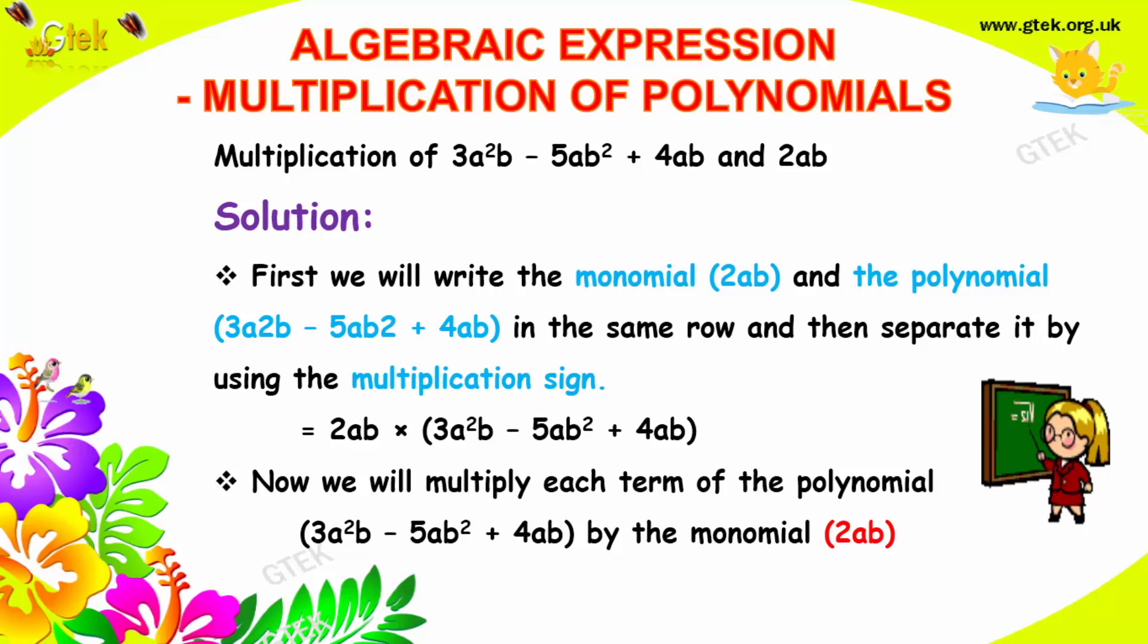I am trying to multiply two expressions. One is 3a²b - 5ab² + 4ab with 2ab. We got a monomial, that's 2ab. It's having only one term. And a polynomial, it's having three terms.